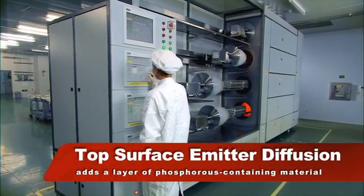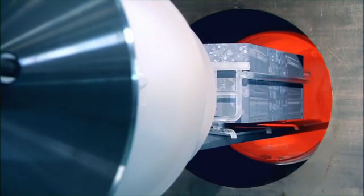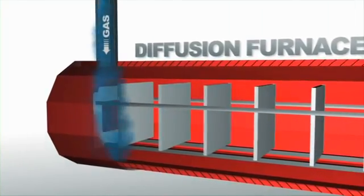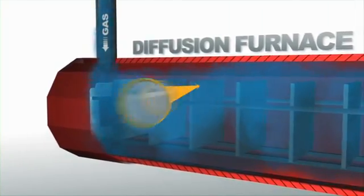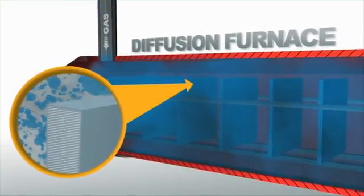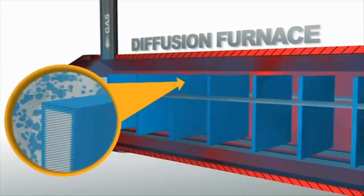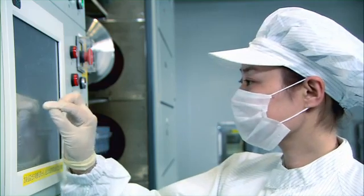Next, the wafers are cleaned thoroughly and placed in a diffusion furnace. Phosphorus source is fed into the furnace via a carrier gas, the generated phosphorus diffusing into the wafer surface at high temperature, forming a P-N junction.